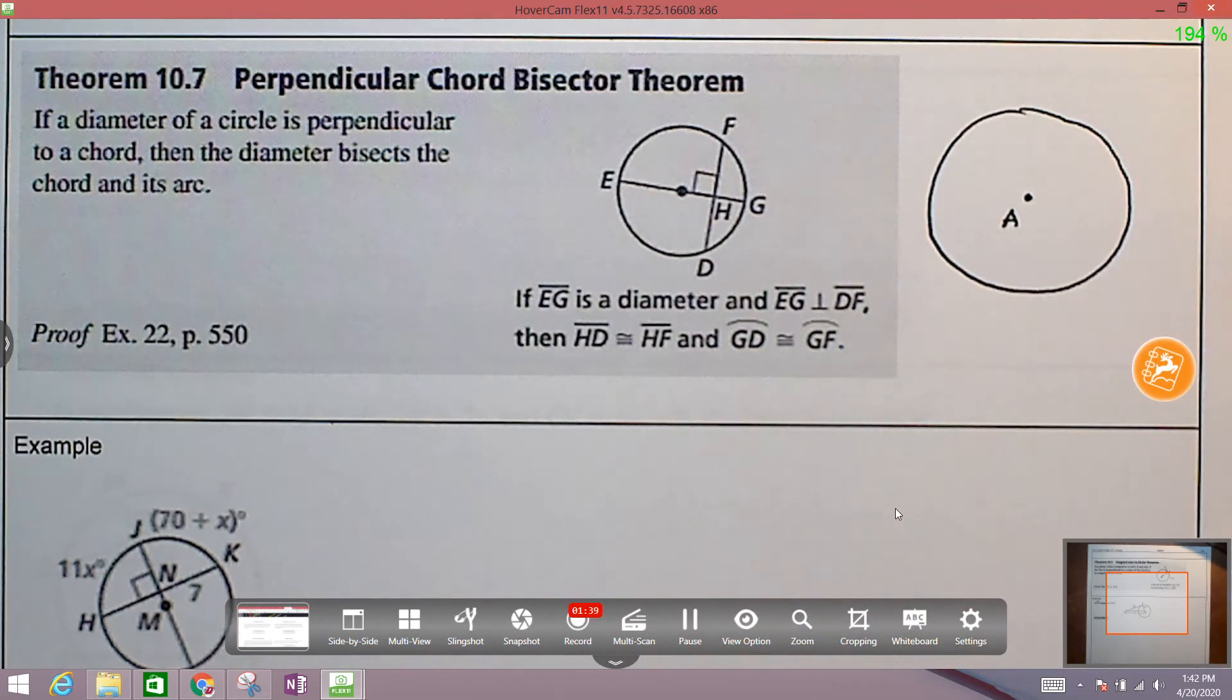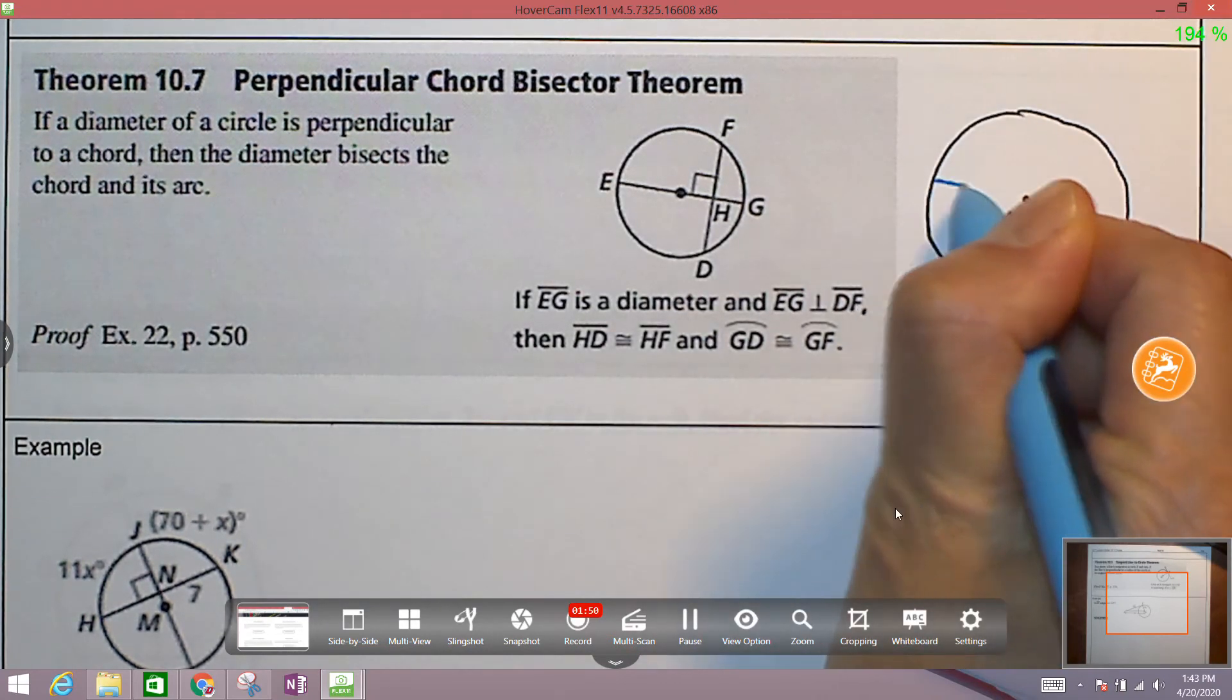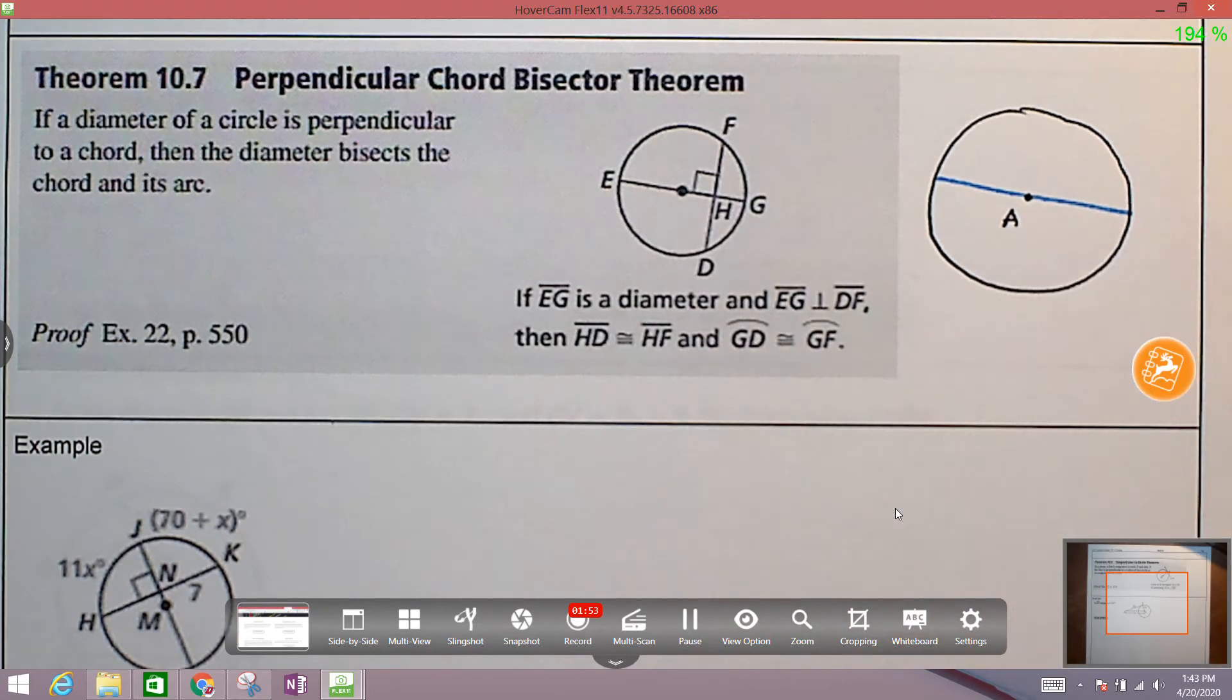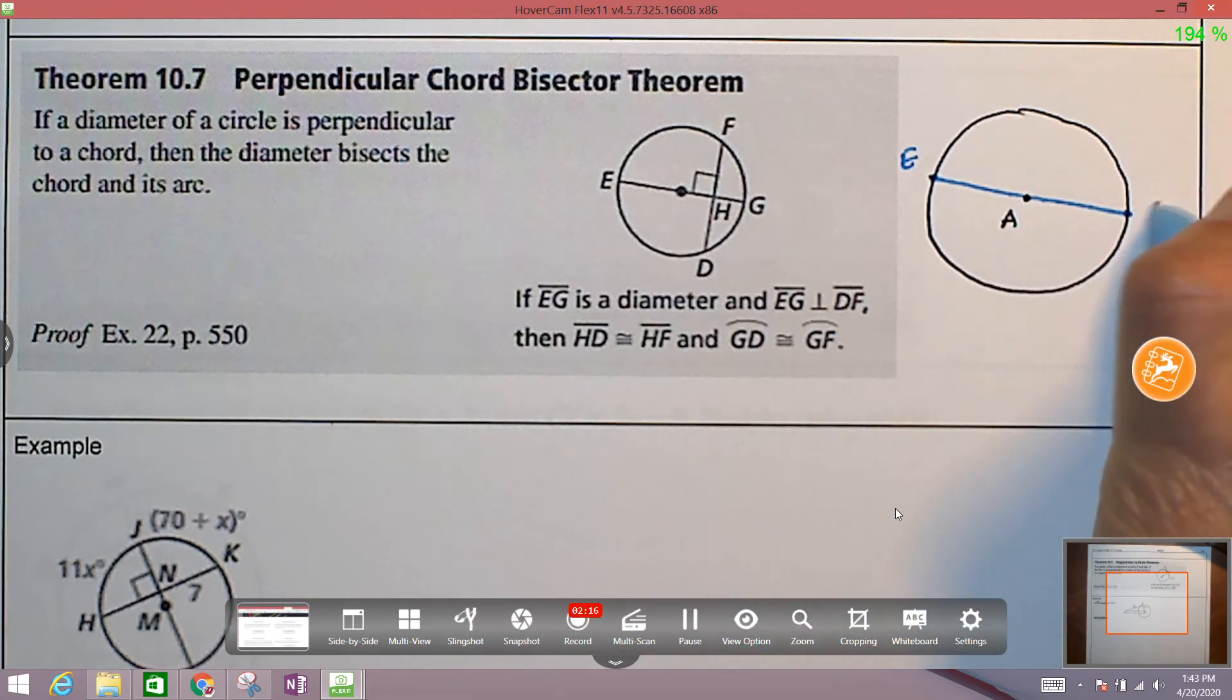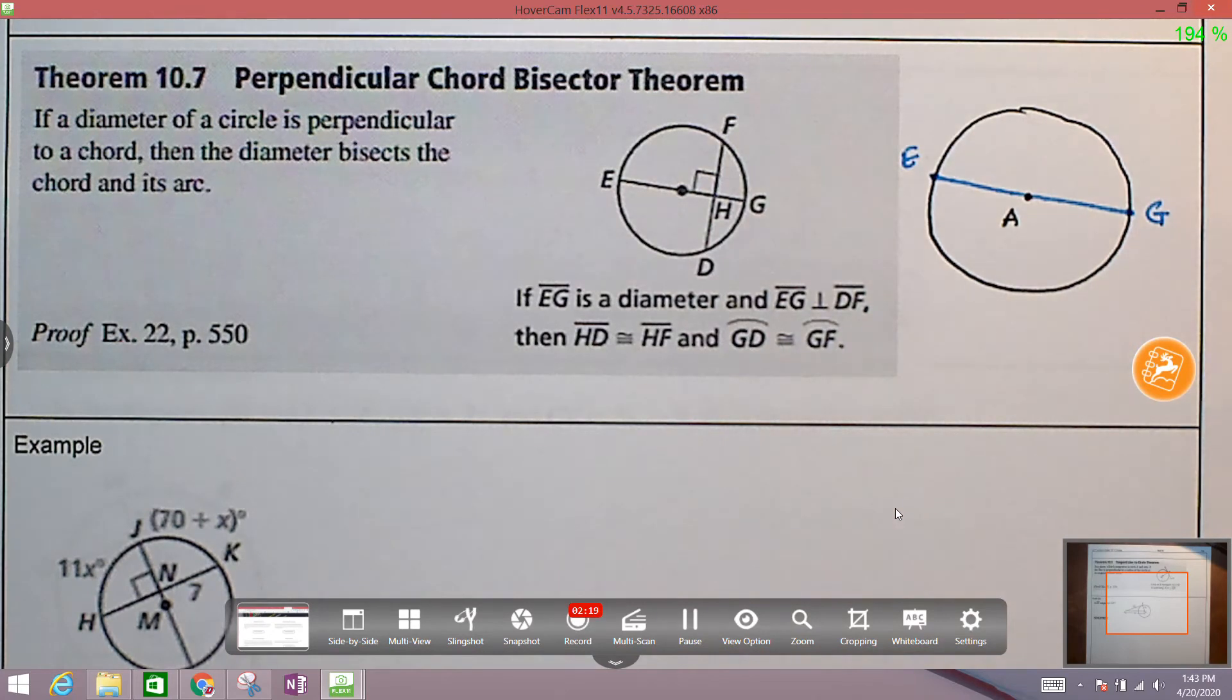Now, there's going to be two chords in this circle. The first chord, I'm going to draw it to make it different. Let's draw it in blue. Remember that a chord is basically a line segment whose end points are on the circle. So it kind of looks like this line segment, it intersects the circle at two points. And those two points are the end points of the circle, of the segment. Let's call this point, point E. Let's call this point, point G. So this is a chord. Segment EG is a chord.